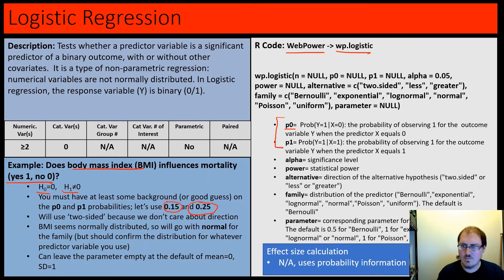We need alpha and power, and then like t-test we need alternative - we can look at two-sided, less, or greater. We'll use two-sided here because we don't care about the direction - maybe low body mass influences mortality too. Now we actually have to tell the test the distribution of the predictor. We know the outcome is binary, but we have to tell them what the x is. For body mass index, the default is Bernoulli, but I'm pretty sure it's normally distributed, so we'll go with normal. You should confirm this with whatever data you actually have.